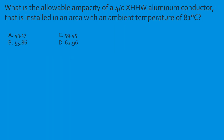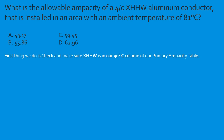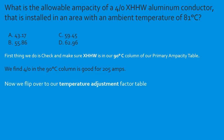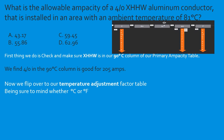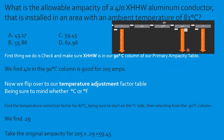Question: What is the allowable ampacity of a 4/0 XHHW aluminum conductor installed in an area with an ambient temperature of 81°C? Check the primary ampacity table — XHHW is listed. Be careful to select from the aluminum side of the 90°C column — 4/0 aluminum is rated at 205 amps. Flip to the temperature adjustment table; this is Celsius, so start on the left. Come all the way over to the 90°C column — correction factor is 0.29. So: 205 × 0.29 = 59.45 amps. Select C.